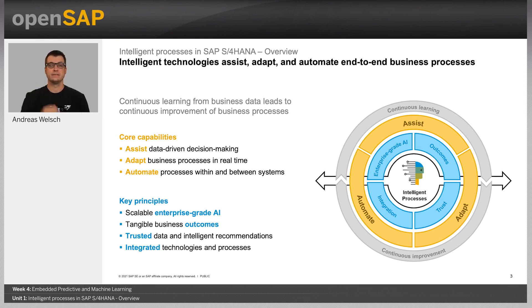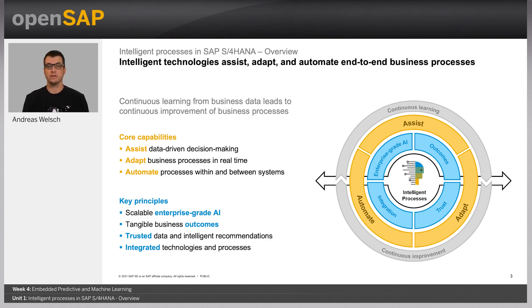Second, adapting business processes in real-time, for example based on sensor data. And third, automating process steps within or between systems with robotic process automation and AI. Today, we'll focus on the latter.